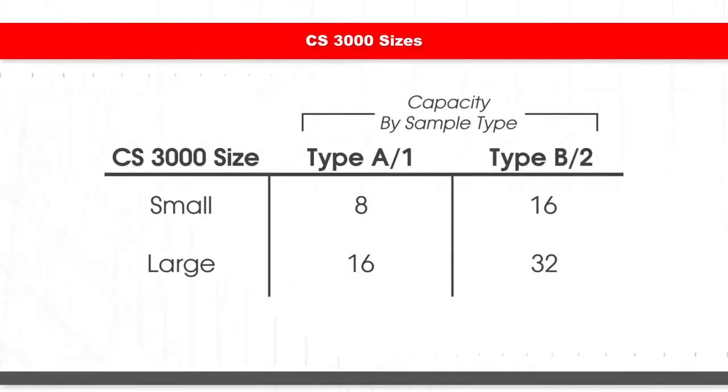The CS3000 is available in multiple sizes capable of holding anywhere from 8 to 32 samples at once.